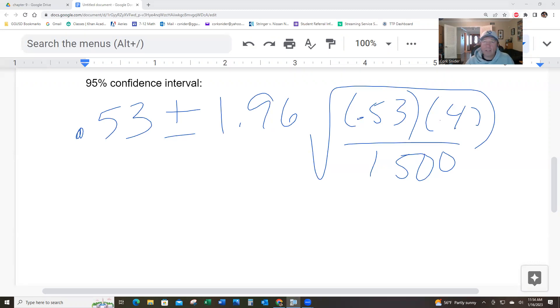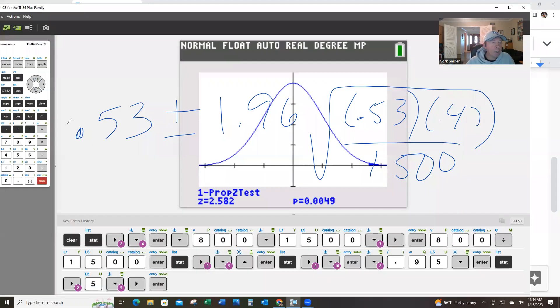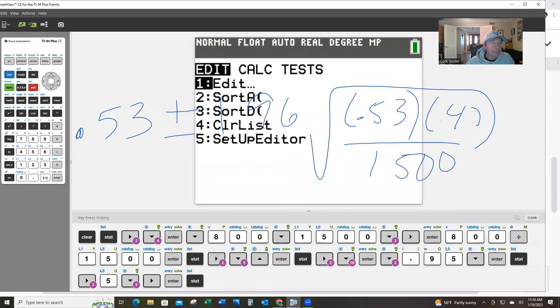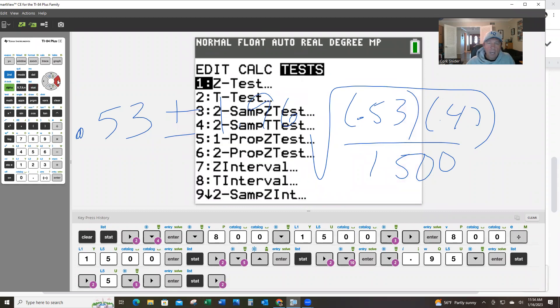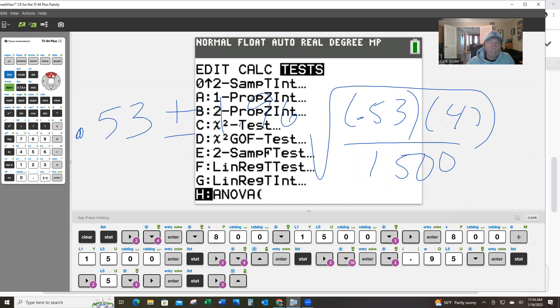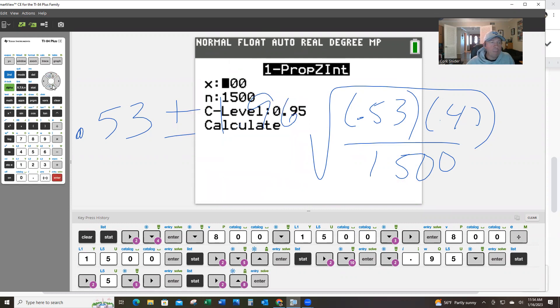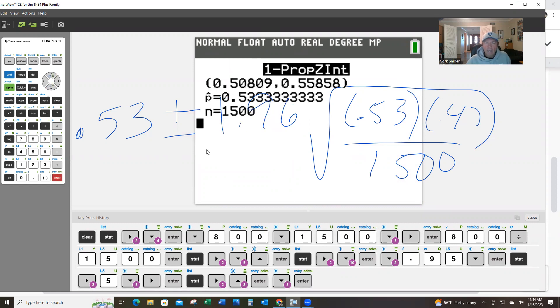And, of course, if you get the answer to that, you're going to go back to your calculator, and you're going to go stat tests, and you're going to go 1propzint, which is item A, and it should be all set up for me, 95% confidence, and we got it.